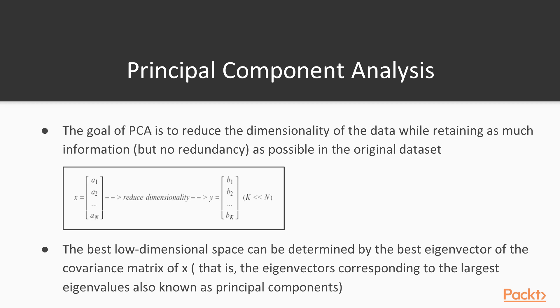This best low dimensional space can be determined by the best eigenvector, which is the eigenvector corresponding to the largest eigenvalues of the covariance matrix X.